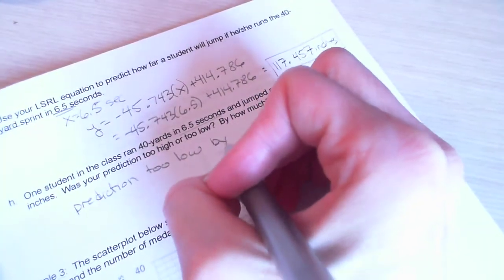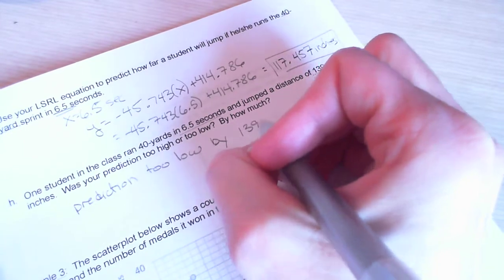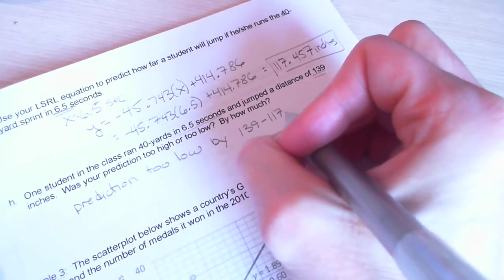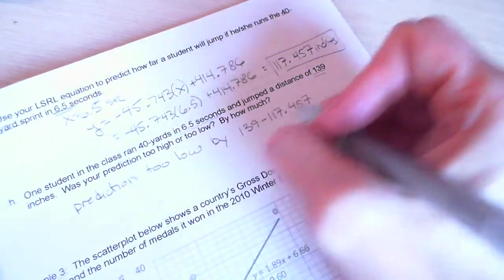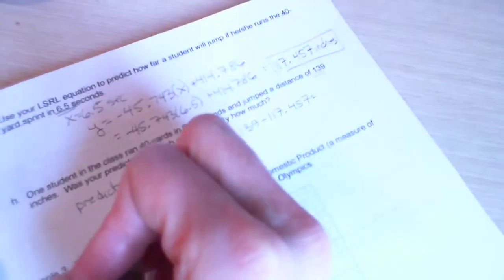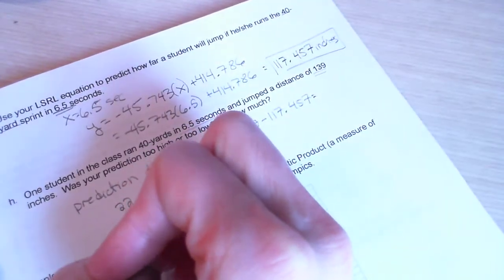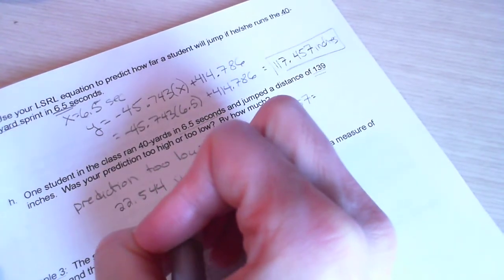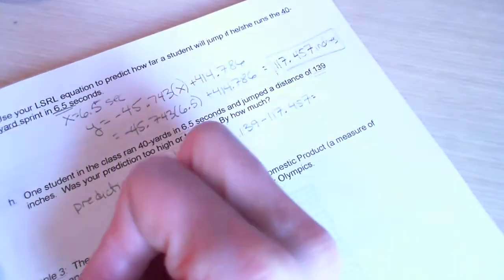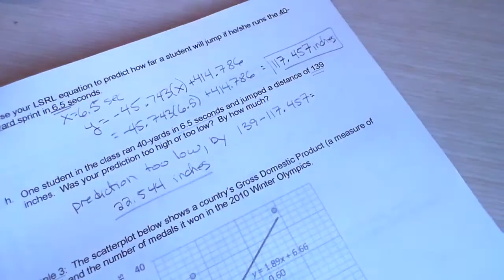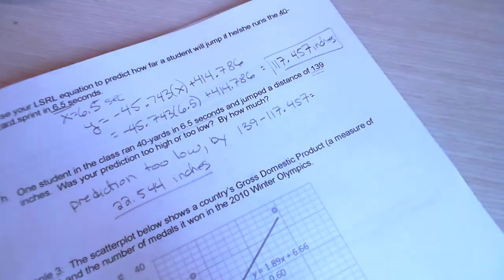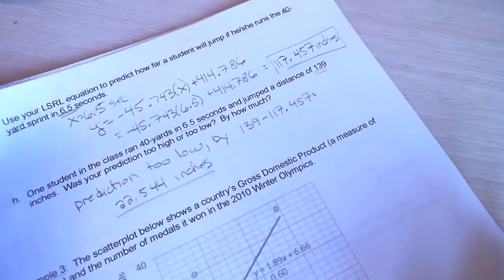So, our prediction was too low by 139 minus 117.457. So, that would be by 21.544 inches. Okay? So, prediction was too low by 22.544 inches. So, that is example two.